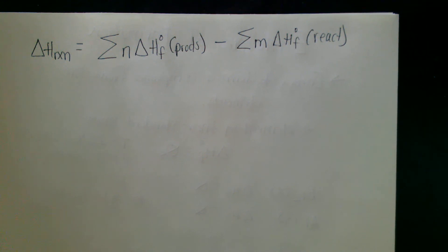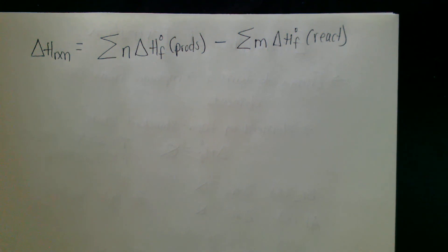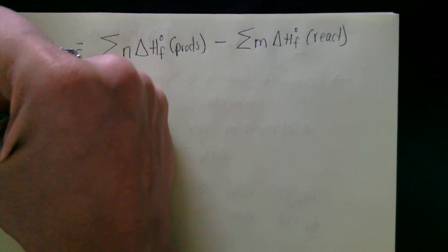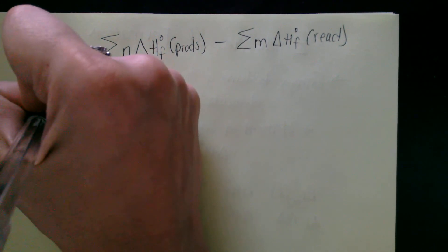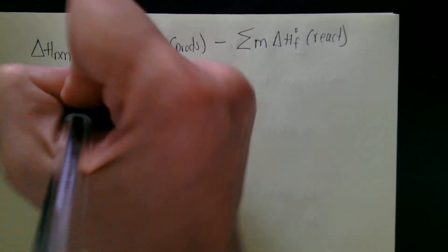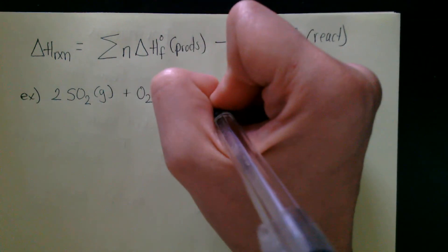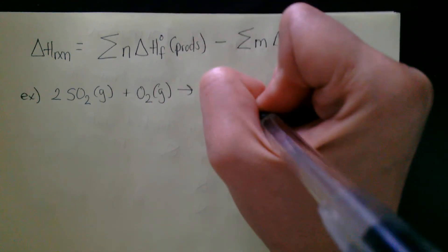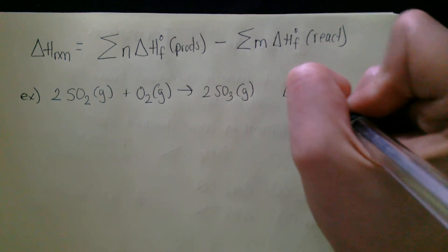If we have a way to measure the enthalpy of a compound from our baseline elements in their standard state, taking the difference between what's happening on the product side versus the reactant side gives us the overall enthalpy change of a reaction. For example, let's calculate the enthalpy of the reaction: 2SO2 gas plus O2 gas yields 2SO3 gas.